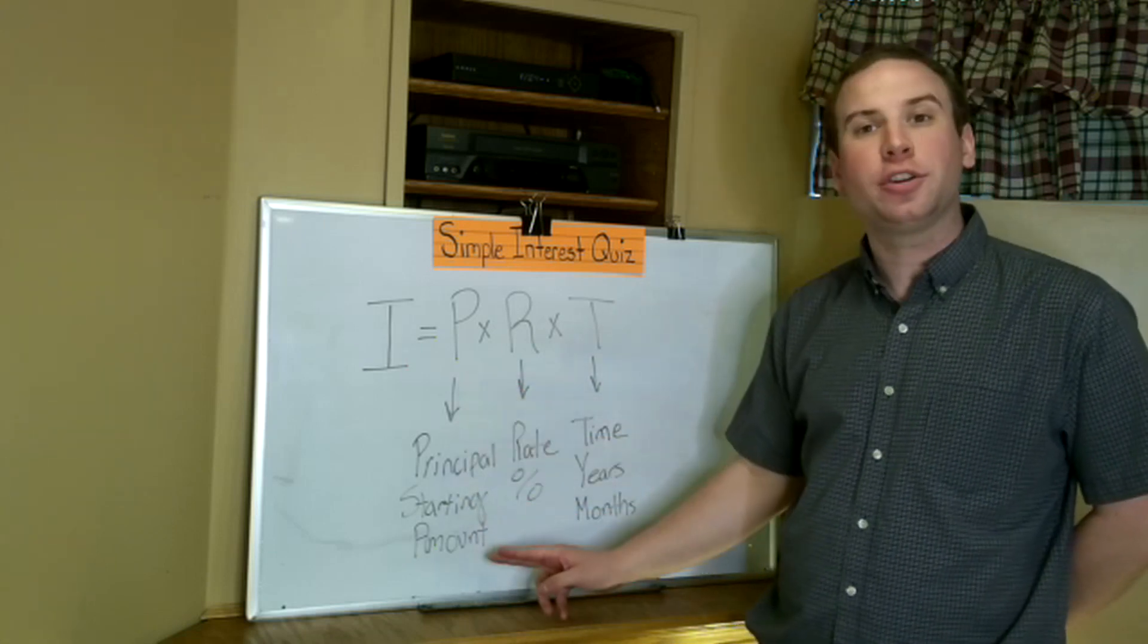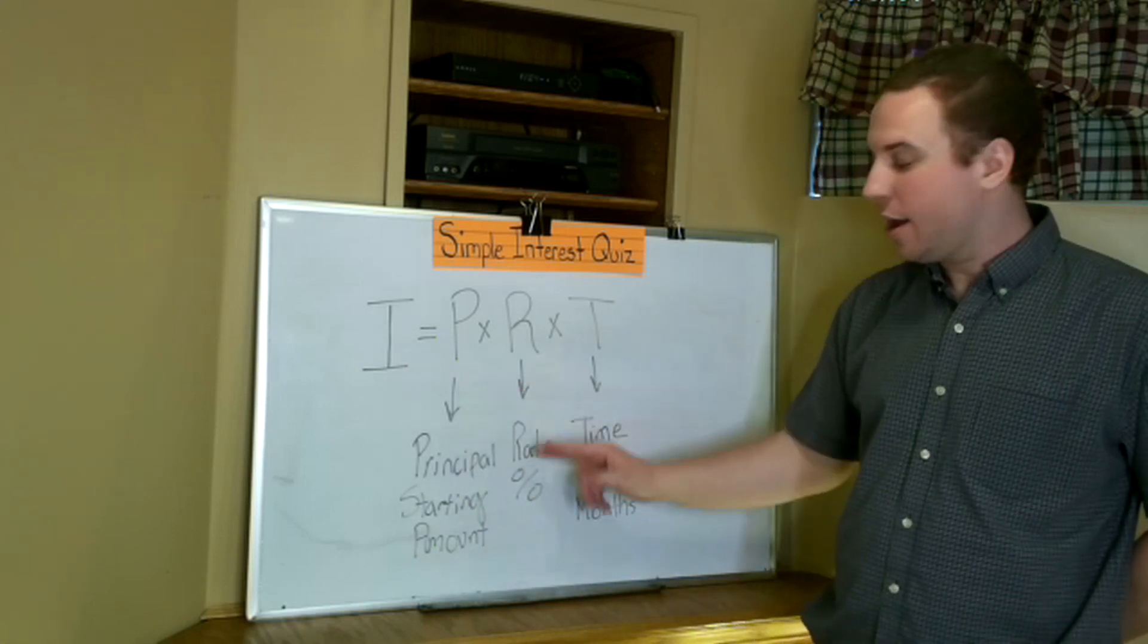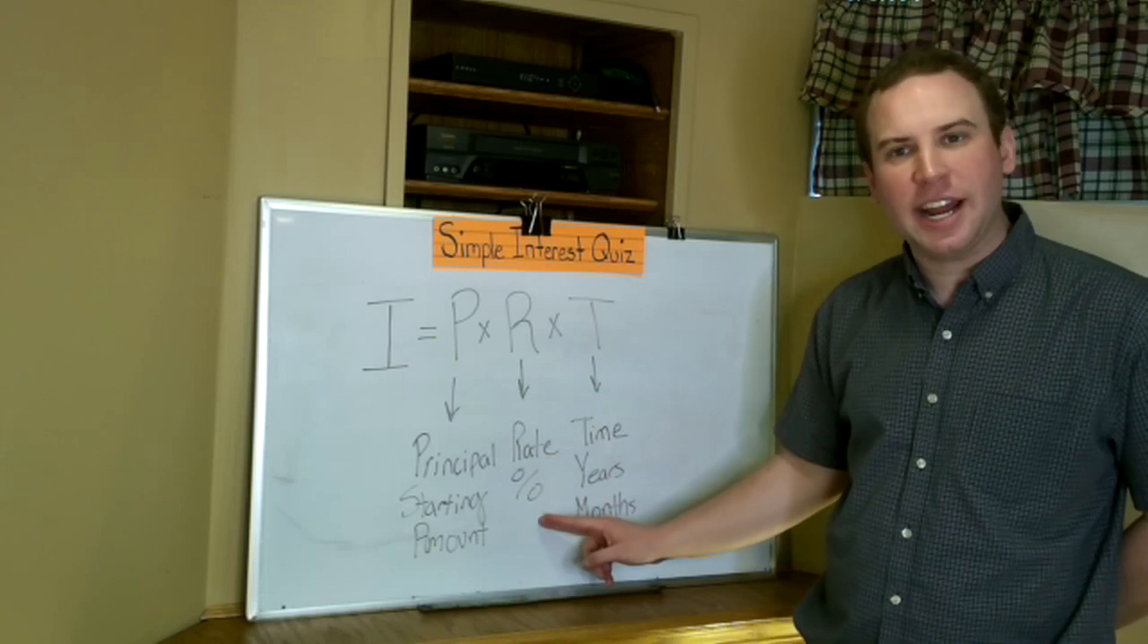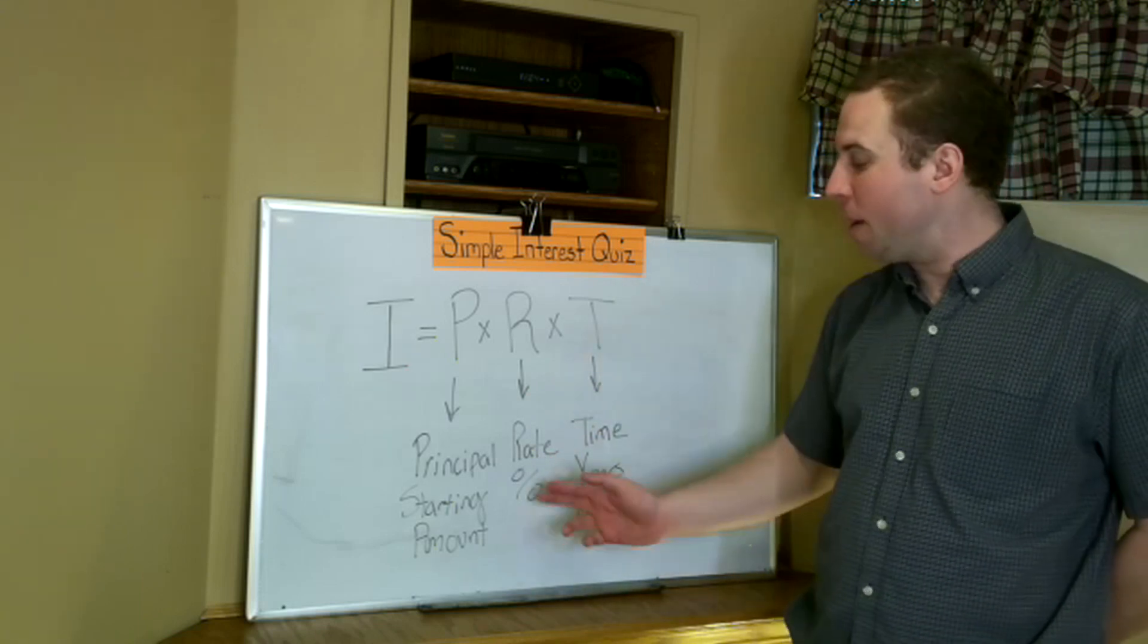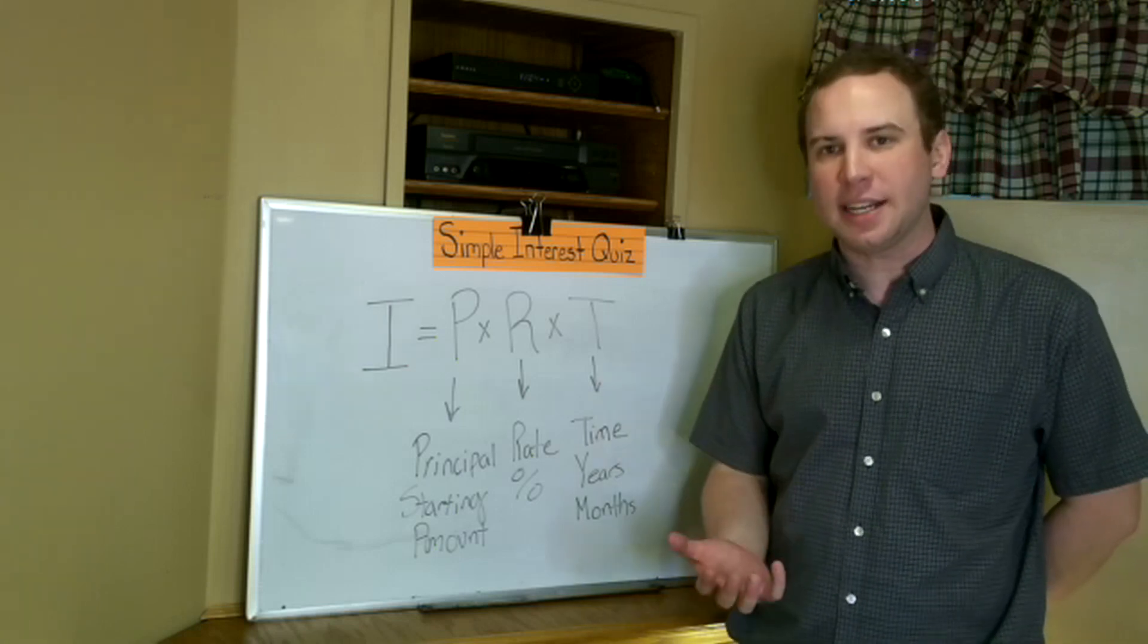P is your principal or your starting amount. R is your rate or your percentage you're going to be using. Now remember, with percents you need to convert them into a decimal.